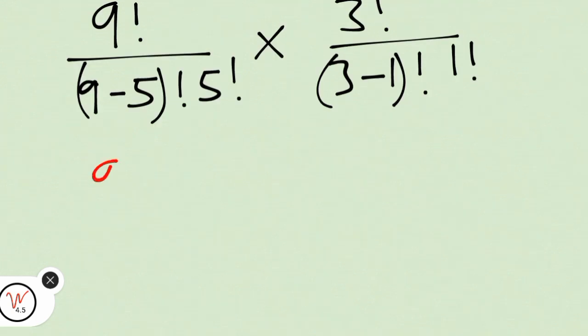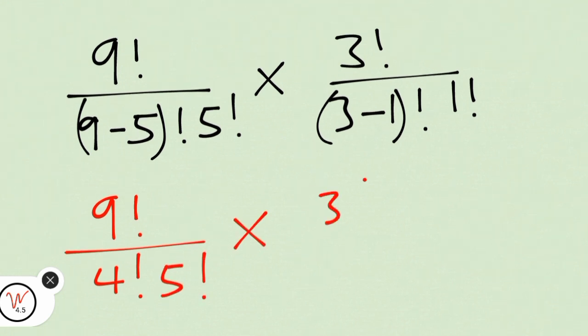This is the same thing as nine factorial over four factorial times five factorial, times three factorial over two factorial times one factorial.